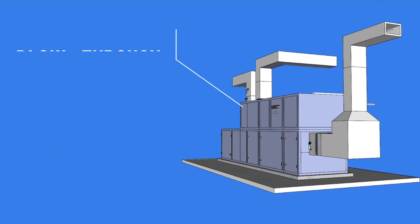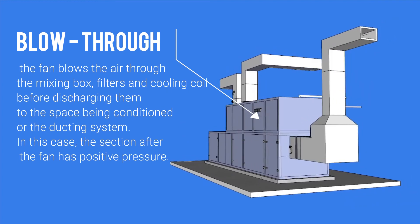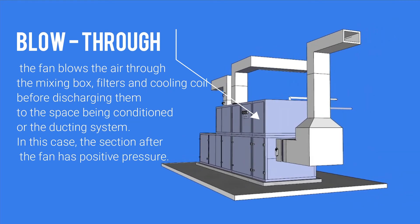In the blow-through type, the fan blows the air through the mixing box, filters and cooling coil before discharging them to the space being conditioned or the ducting system. In this case, the section after the fan has positive pressure.